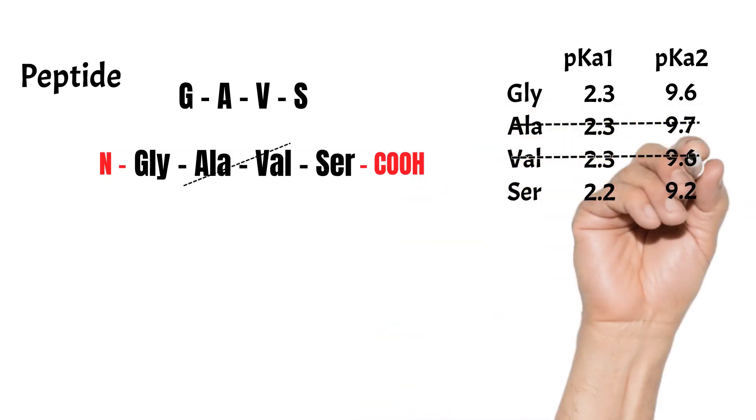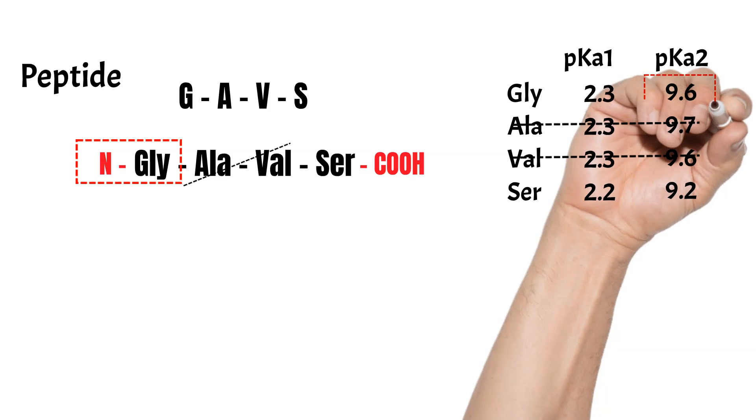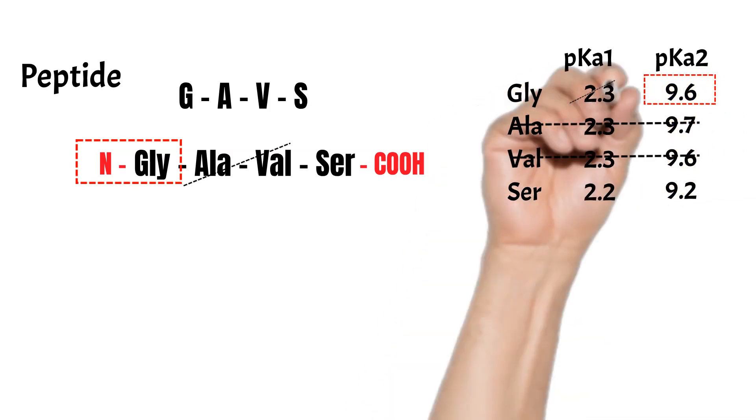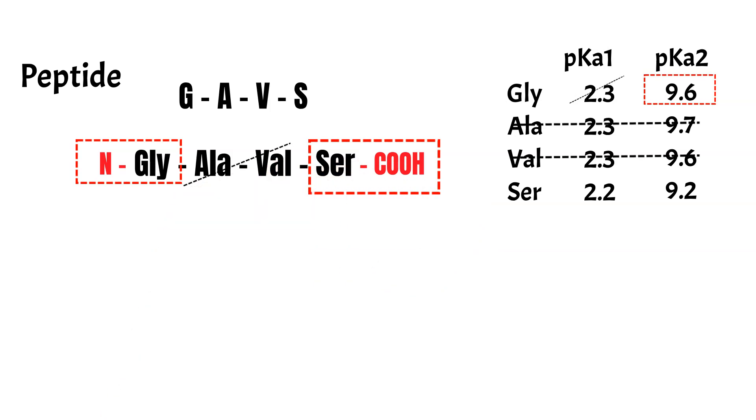For that, we just ignore them and their pK values. Then only free groups will affect the peptide charge and the pI value. For glycine, only pK value for the amino group, pK2, will be used for pI calculation. And for serine, only pK value for the carboxyl group, pK1, will be used.